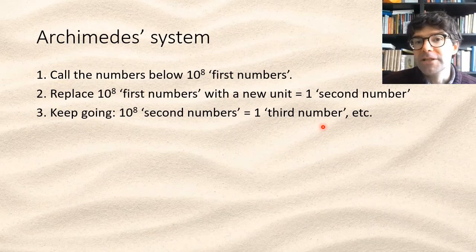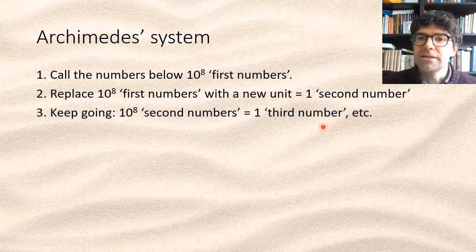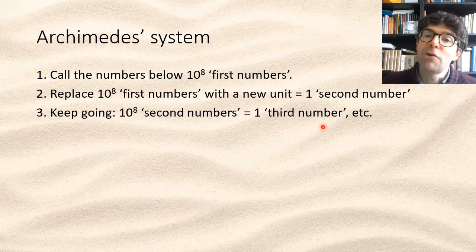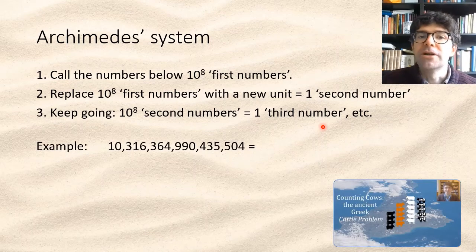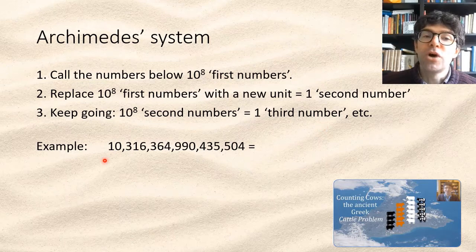If you chop up a big number into eight-digit chunks starting from the end, each chunk is going to correspond to a different class of number, and its contents say how many units of that class you have. So let's take an example. In my videos on the cattle problem attributed to Archimedes, I interpret that poem to involve the number 10,316,364,990,435,504.